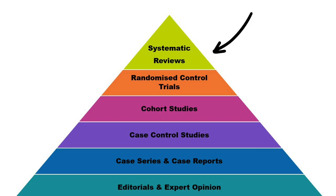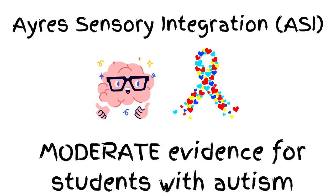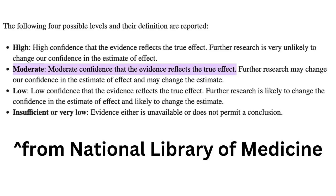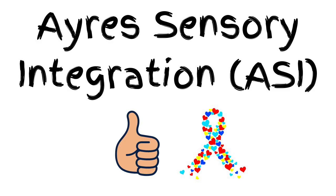Here are the key findings. For Ayres Sensory Integration, the study showed moderate evidence of effectiveness in improving sensory and motor outcomes for individuals with autism. This means that ASI can be a valuable tool in addressing sensory processing difficulties in students with autism.